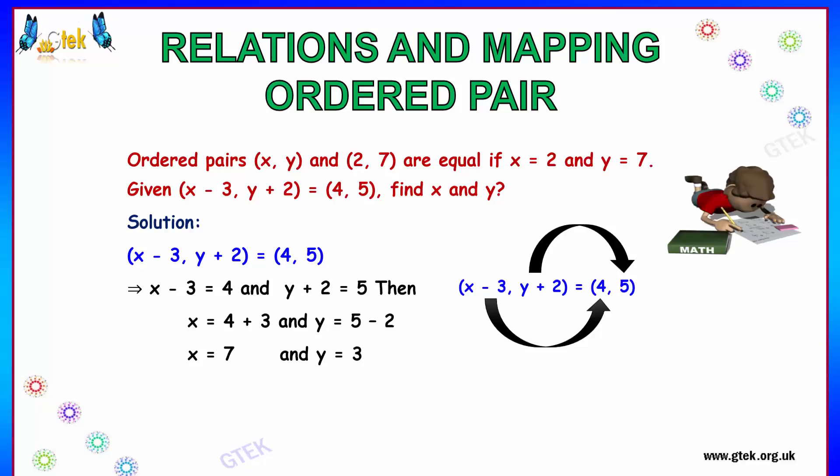So we got x minus 3 is equal to 4. Minus 3 will become plus 3 here, so x equal to 7. Y plus 2 is equal to 5. Plus 2 will become minus 2 here. Y is equal to 3, and x is equal to 7.